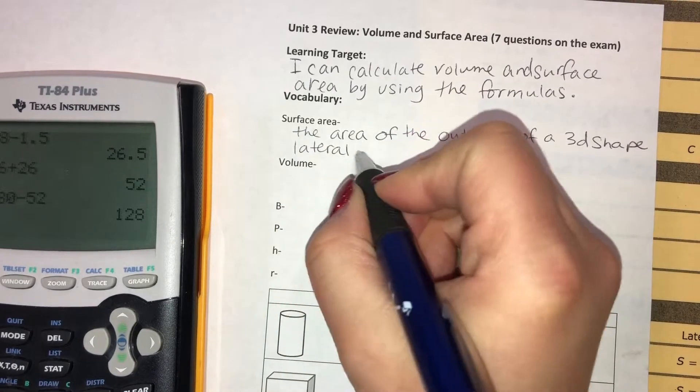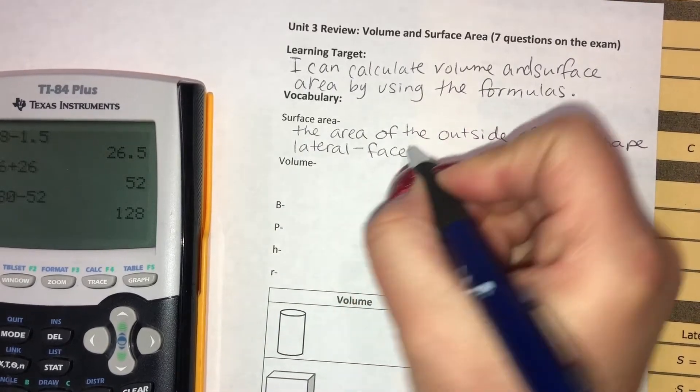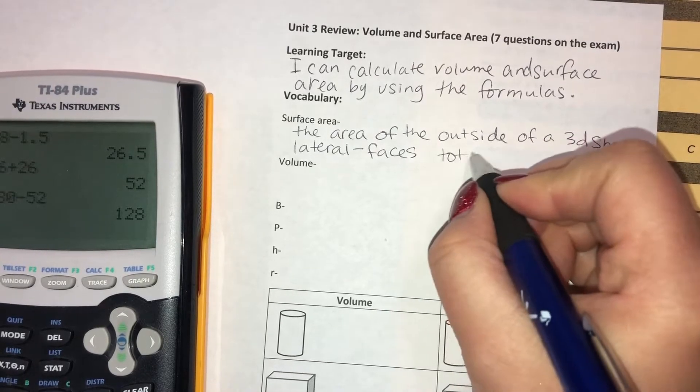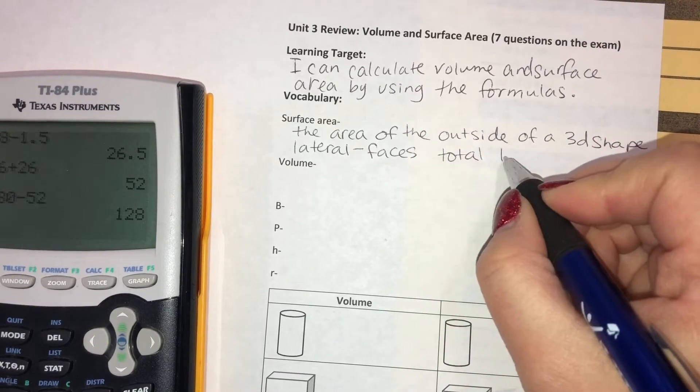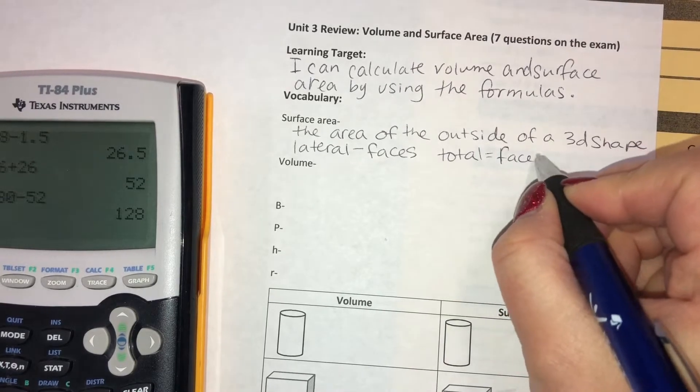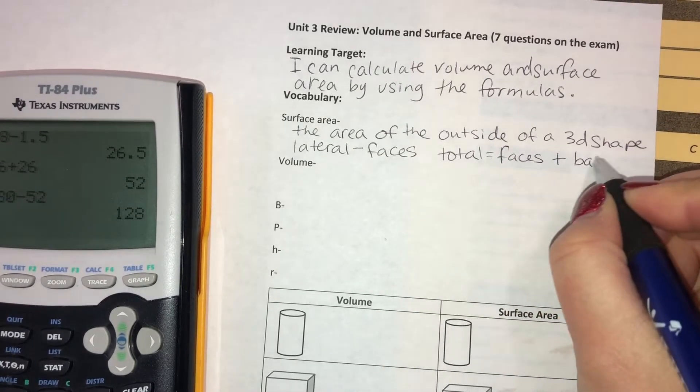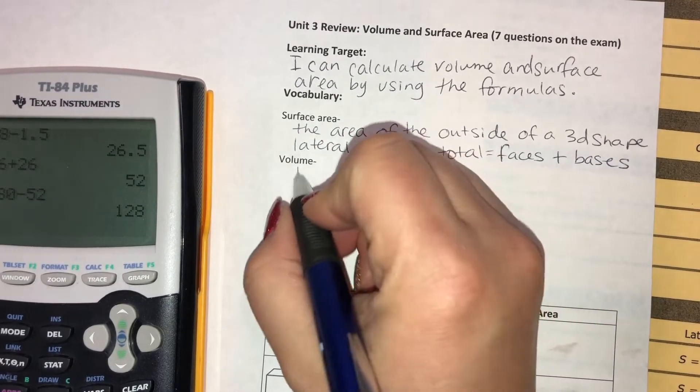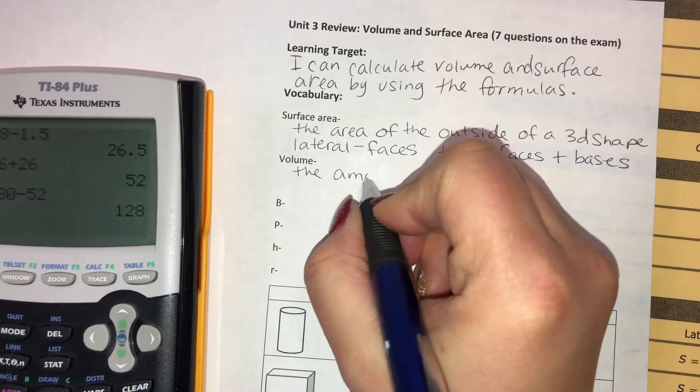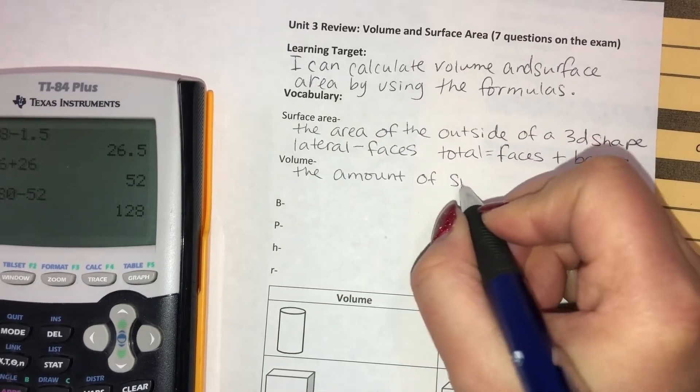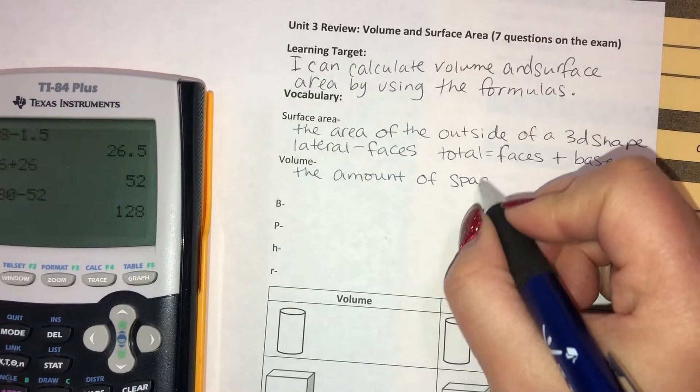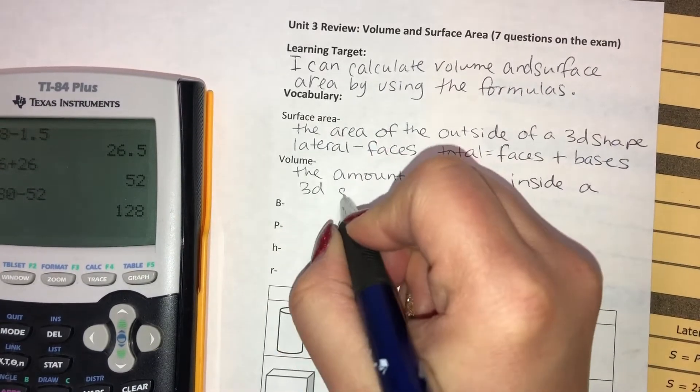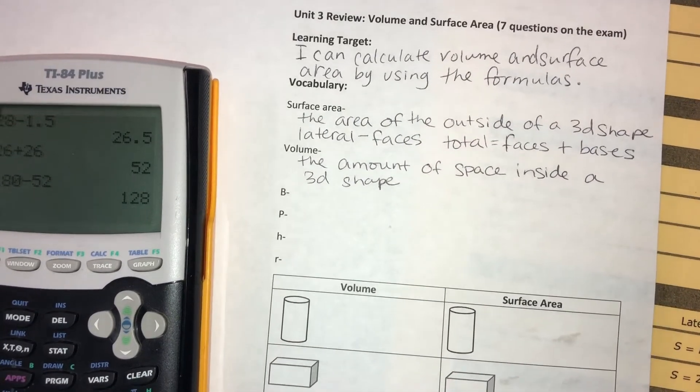There's lateral, which is just the faces - the fronts and the sides and the back. And then there's total, which is the faces plus the bases, so all sides. Volume is the amount of space inside a 3D shape, how much stuff you can put inside the shape.